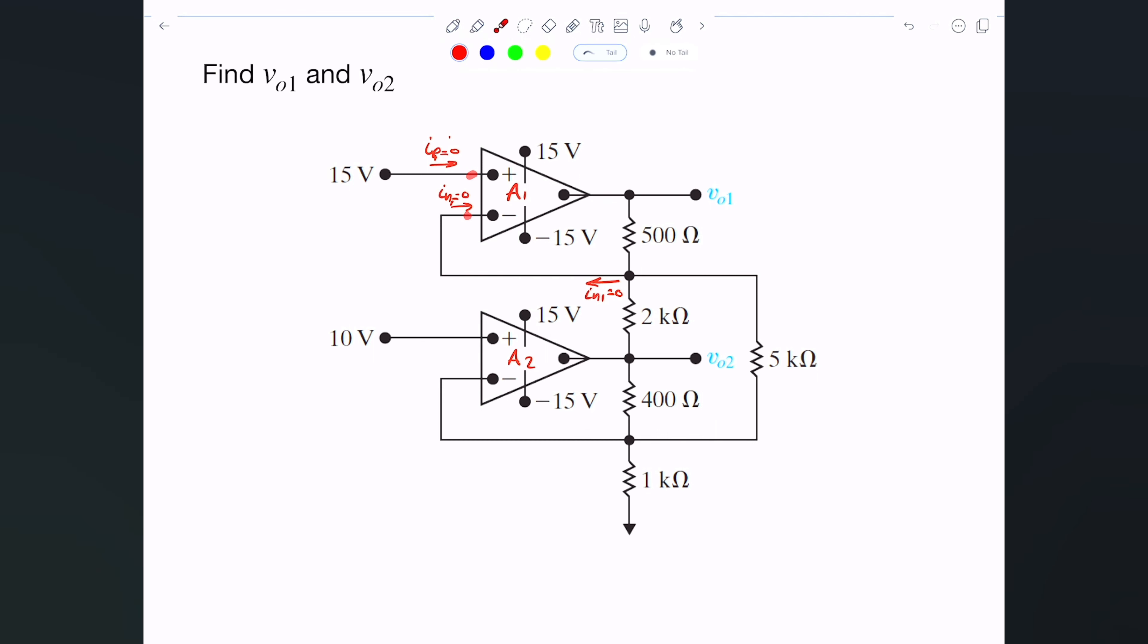What else do we know? We know the point here and the point here have the same voltage, so the voltage here will be 15 volts. That means if you follow this wire, you'll see that the voltage here is also 15 volts.